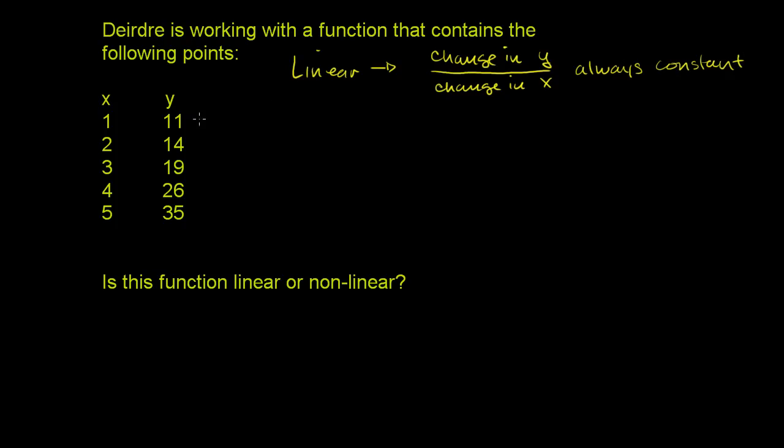Now, in this example, the change in x's are always 1. We go from 1 to 2, 2 to 3, 3 to 4, 4 to 5. So in this example, the change in x is always going to be 1. So in order for this function to be linear, our change in y needs to be constant, because we're just going to take that and divide it by 1. So let's see if our change in y is constant.